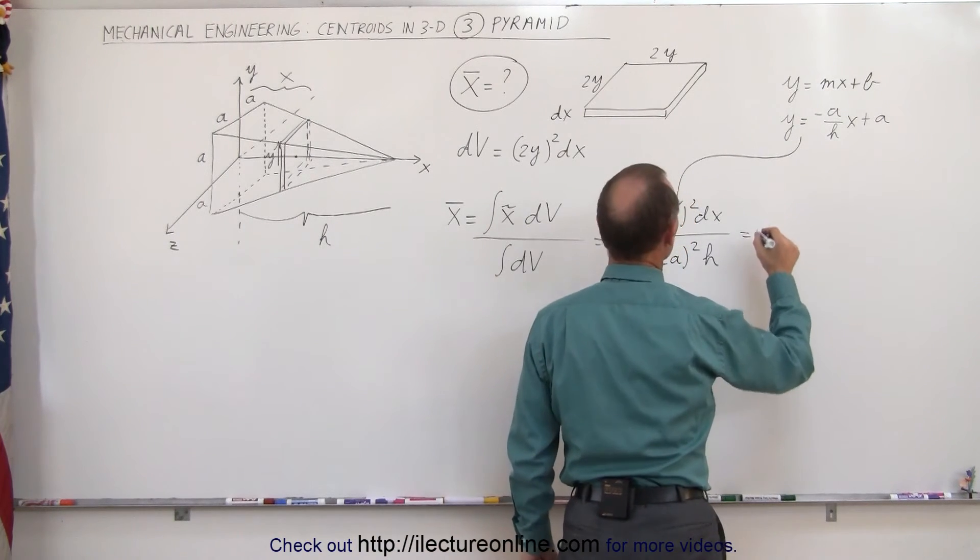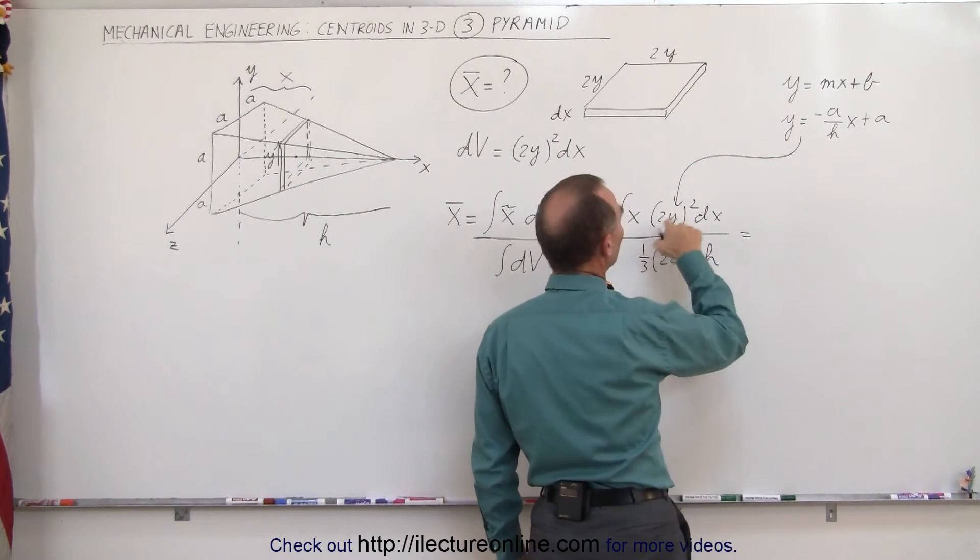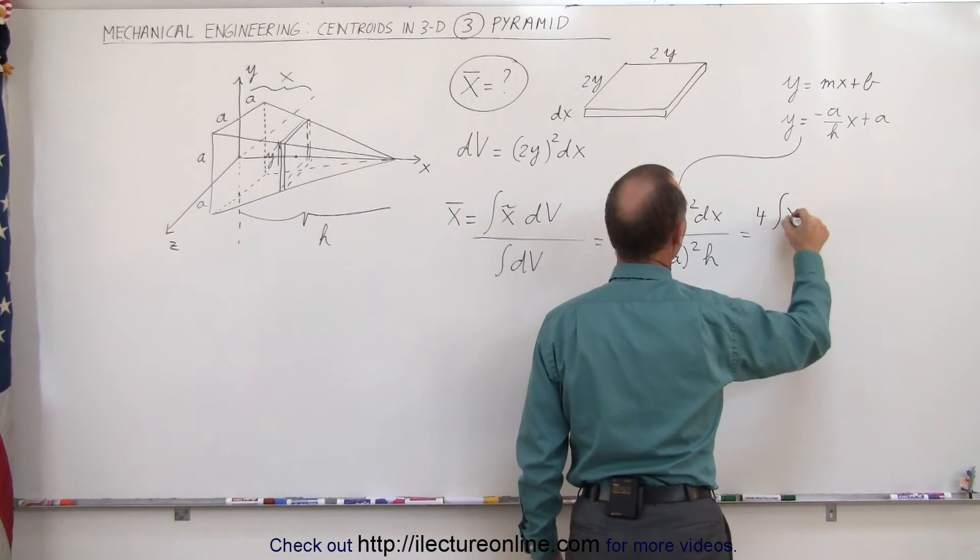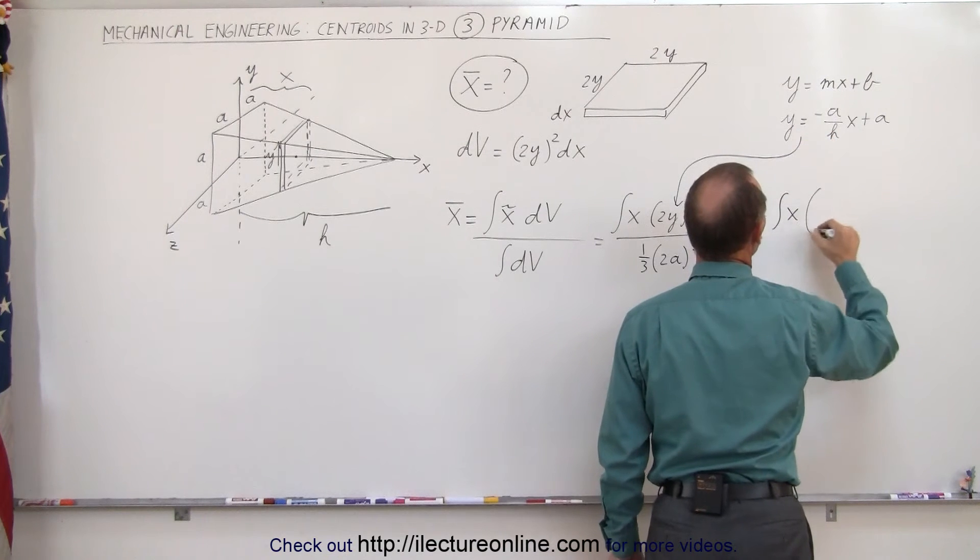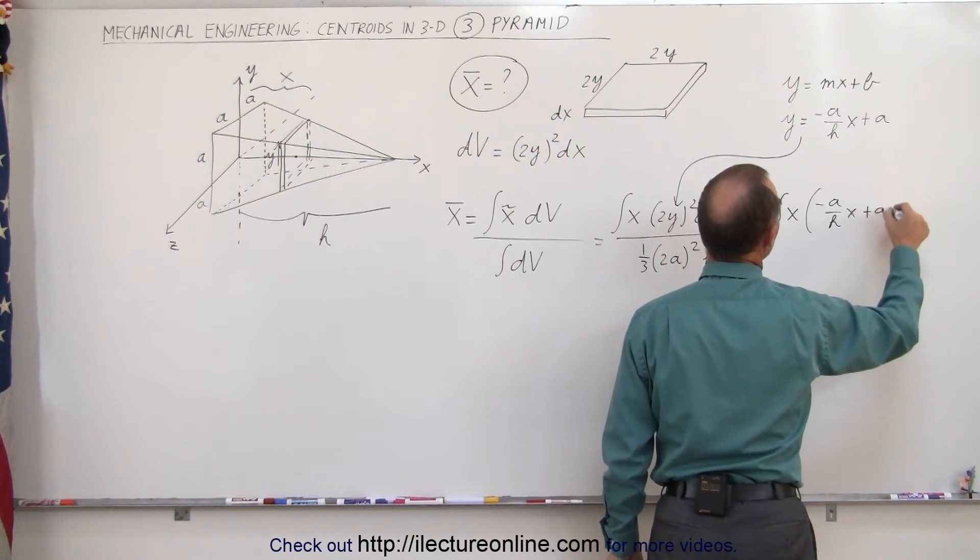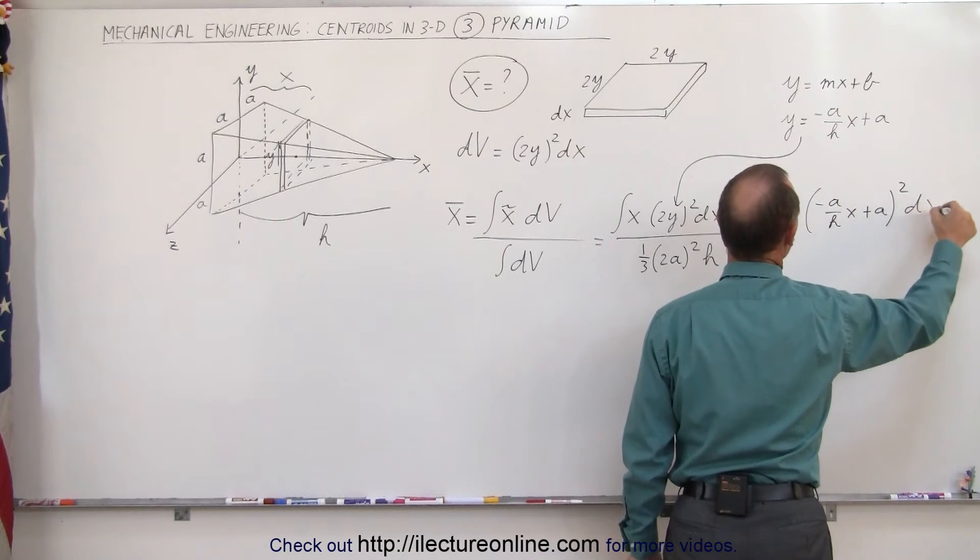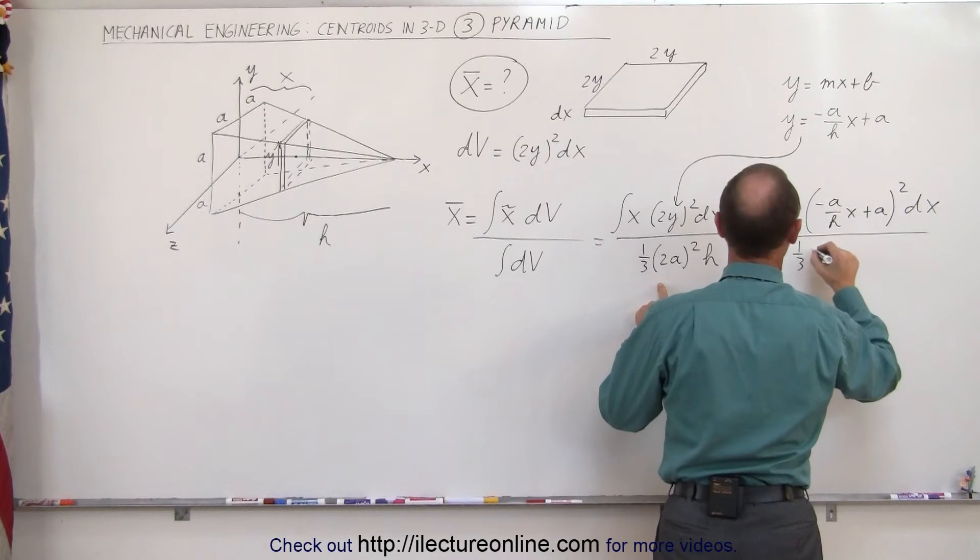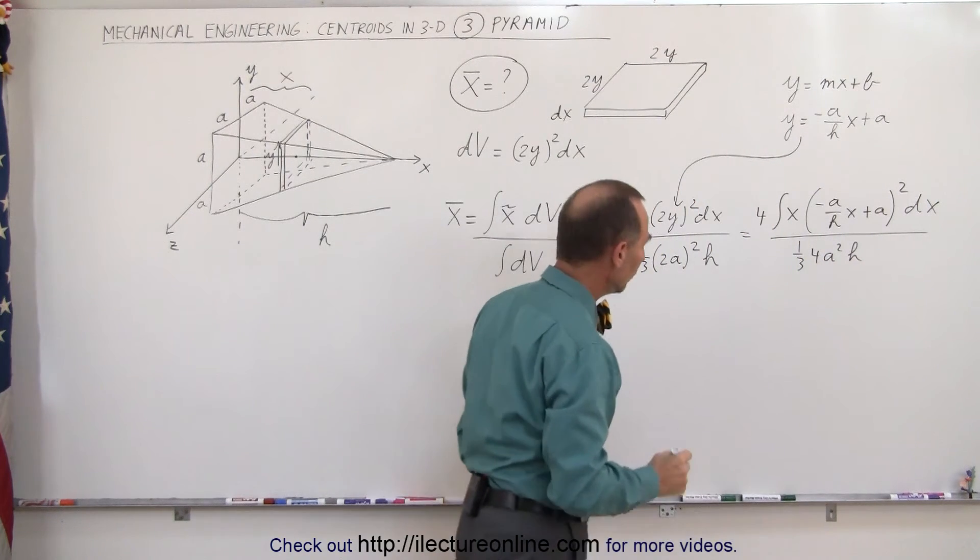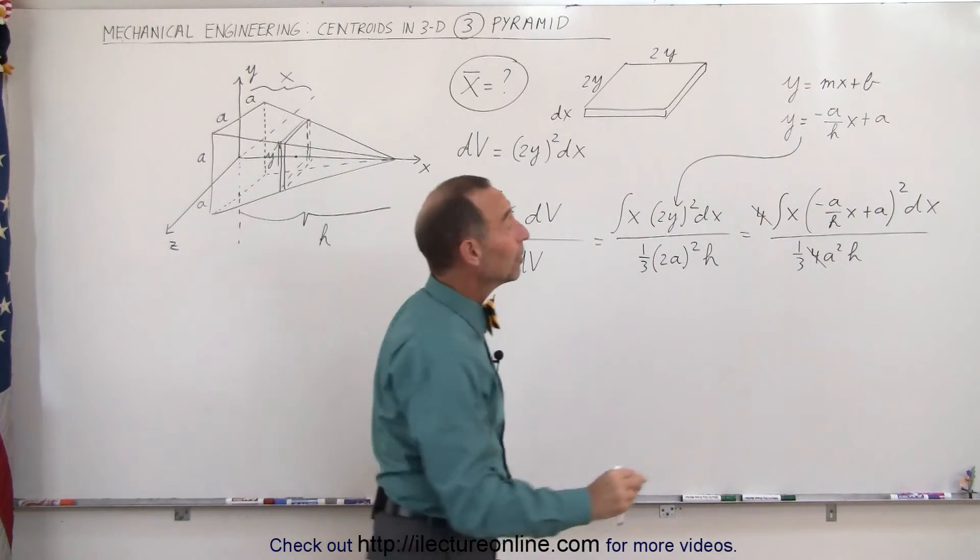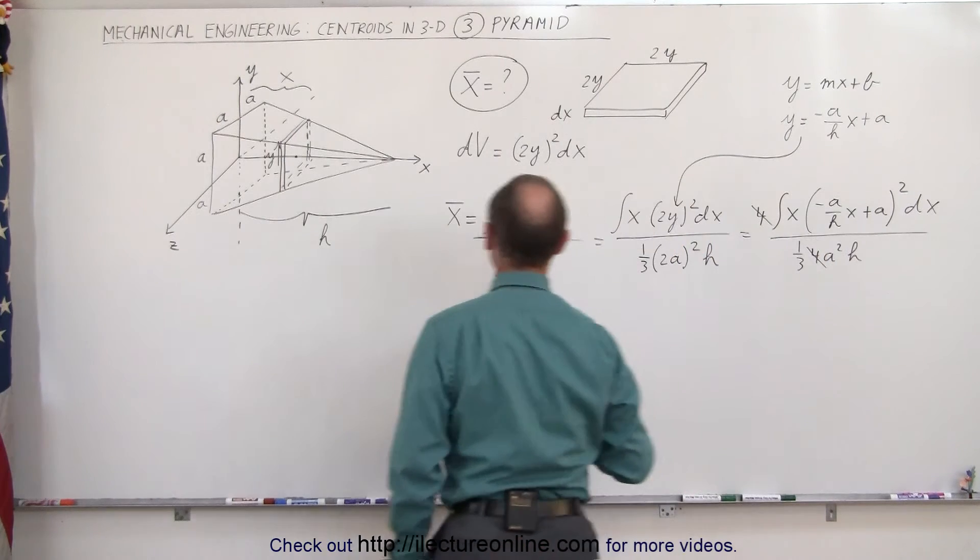This is equal to... We can take 2 squared outside the integral sign. This is 4 times the integral of x times y squared, divided by one-third times 4a squared times h. We can already get rid of this 4 and this 4. Next thing we need to do is square this so we can integrate it.